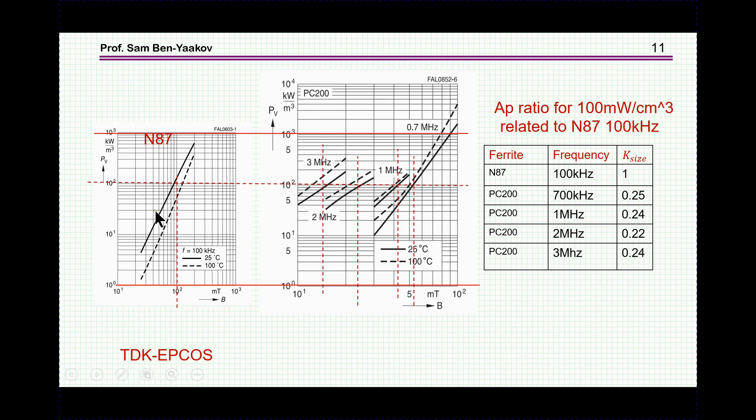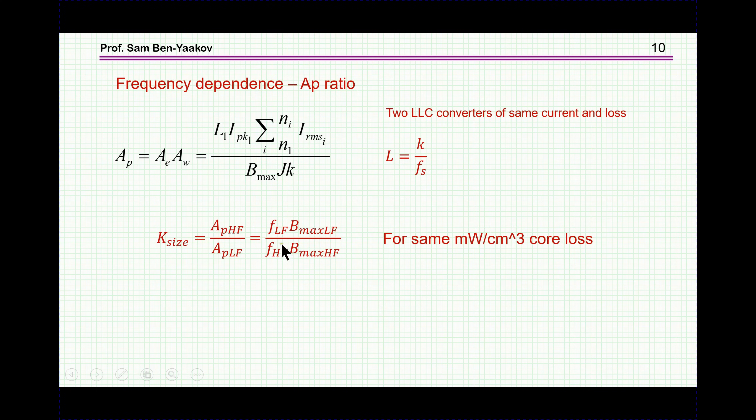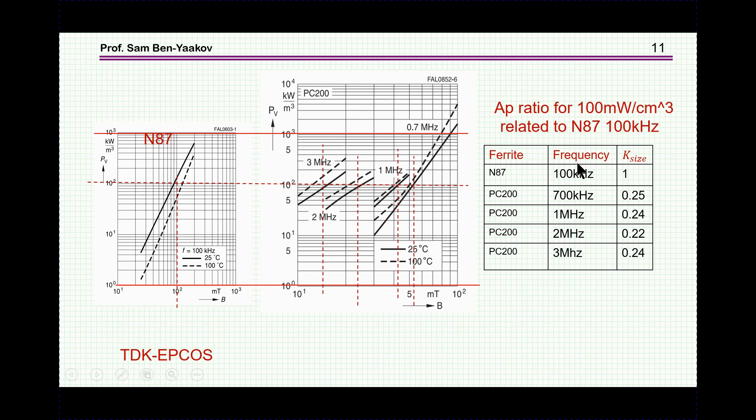This is for the 100 kHz design, which is the baseline for which I'm going to compare a high frequency design, which is based on the PC200. I assume that the power loss limit of the core is 100 mW per centimeter cube. This is for the 100 kHz, and we find here that the B_max is 100 mT. For the PC200 material, it really depends on the frequency. There are two lines here for two temperatures. I've taken just the midpoint here, and looking for the B_max for the different frequencies.